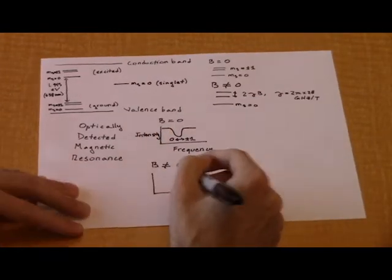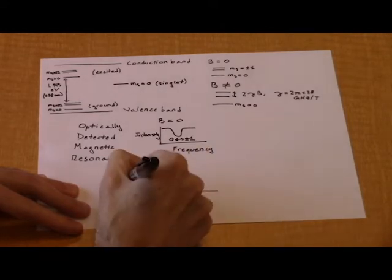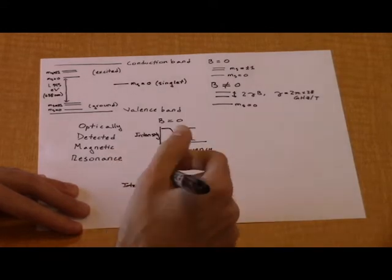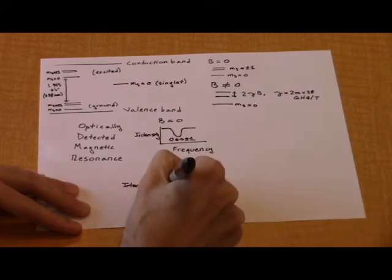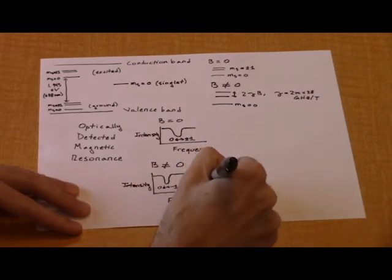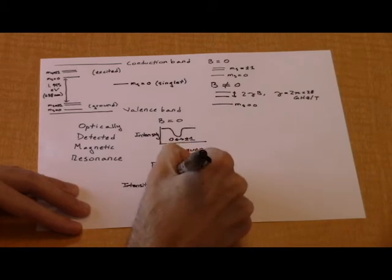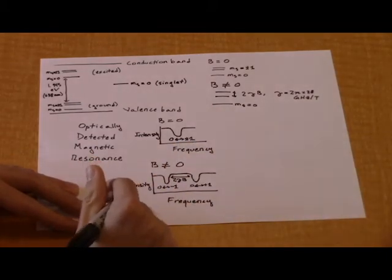However, once the center is in a magnetic field, the plus minus 1 sublevels are no longer degenerate and there will be two ODMR dips corresponding to the zero minus 1 and zero plus 1 resonances. The frequency difference between these two dips allows the calculation of the magnetic field.